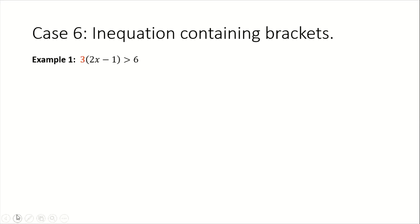Example 1: we have 3 times (2x minus 1) is greater than 6. Note that the bracket implies multiplication. The first thing that we need to do is to remove the bracket. We can remove the bracket by applying the distributive property, which states that whatever term is on the outside of the bracket, we should use it to multiply each term inside of the bracket. So we're going to do that for step 1.